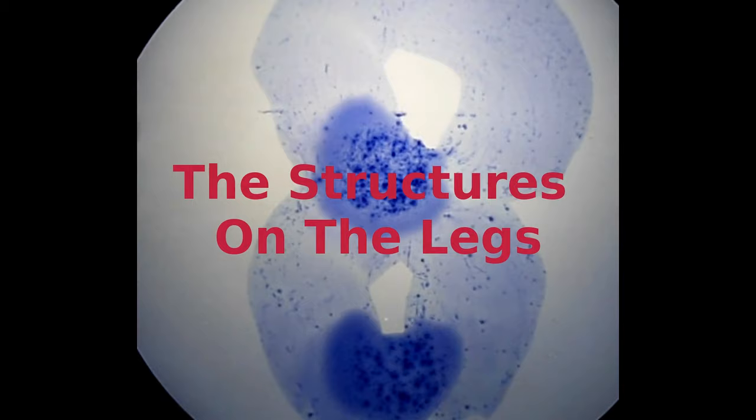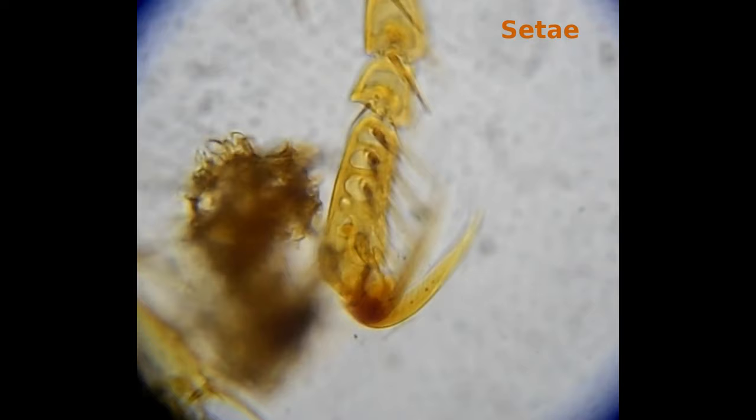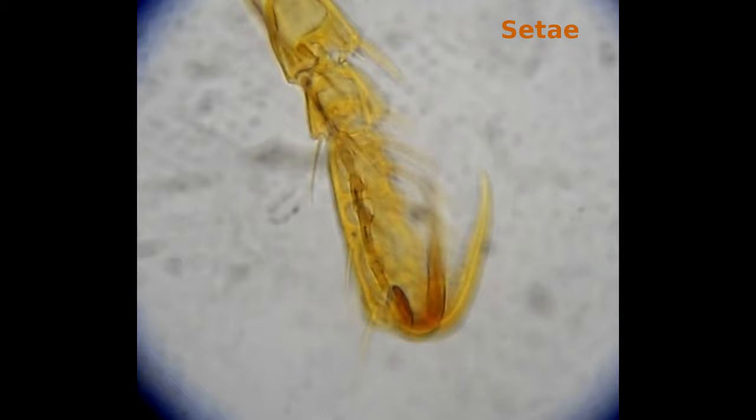Number eight, the structures of the legs. Along the length of the legs, we can see hairs. These are called setae, which are found in many insect species. The purpose of the bristles is varied. Again, some of them will be acting as guards to keep host hair from brushing against the flea. Smaller bristles will have a sensory function, and allow the flea to feel what's going on around it.